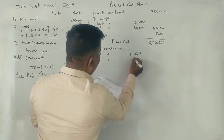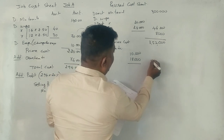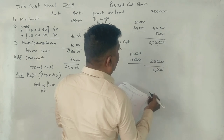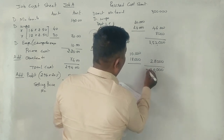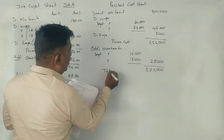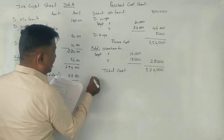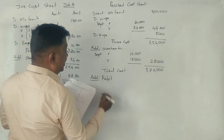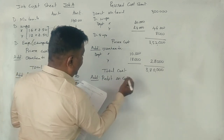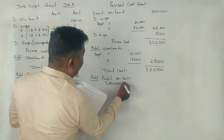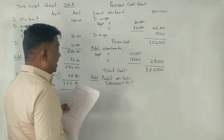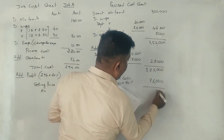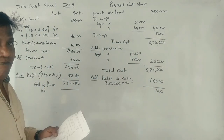We need to arrive at 45,000, then work into 5,00,000. Leaving out the cost of sale, we get 25,000. The total cost is 3,80,000 rupees. Adding 20% profit gives 76,000 rupees.